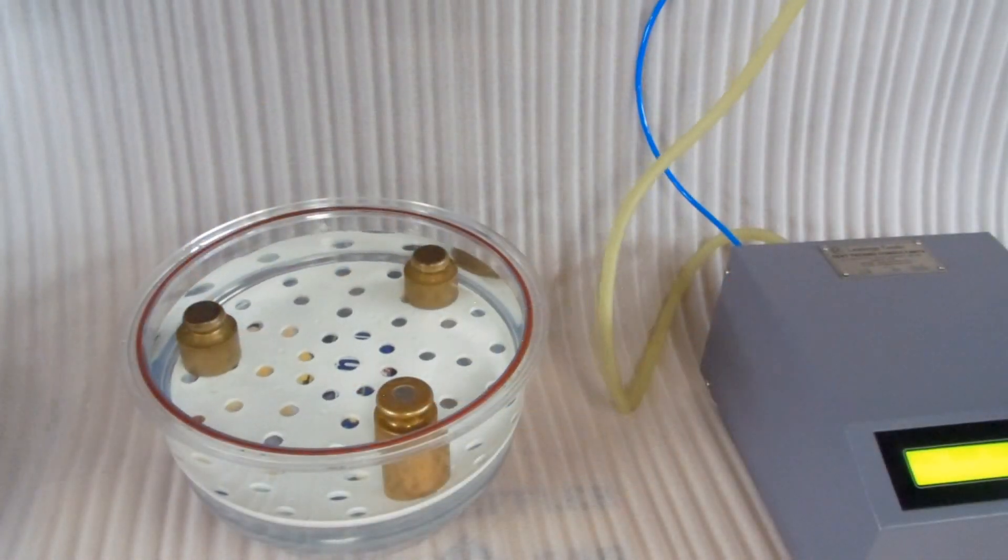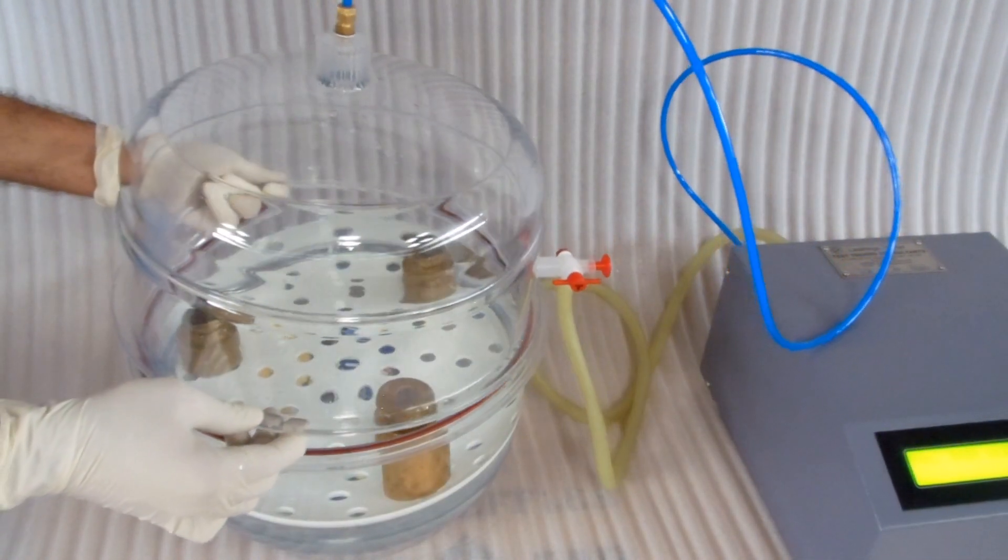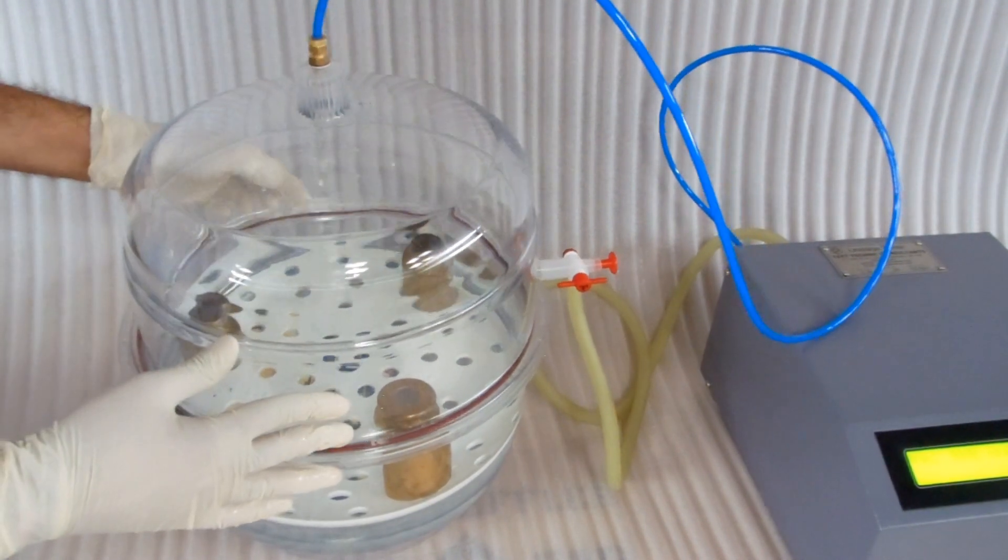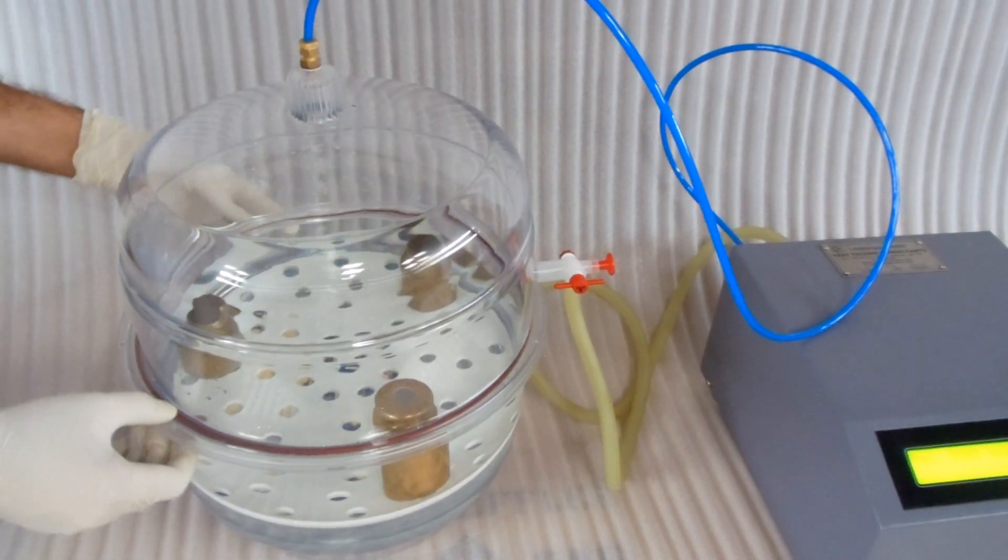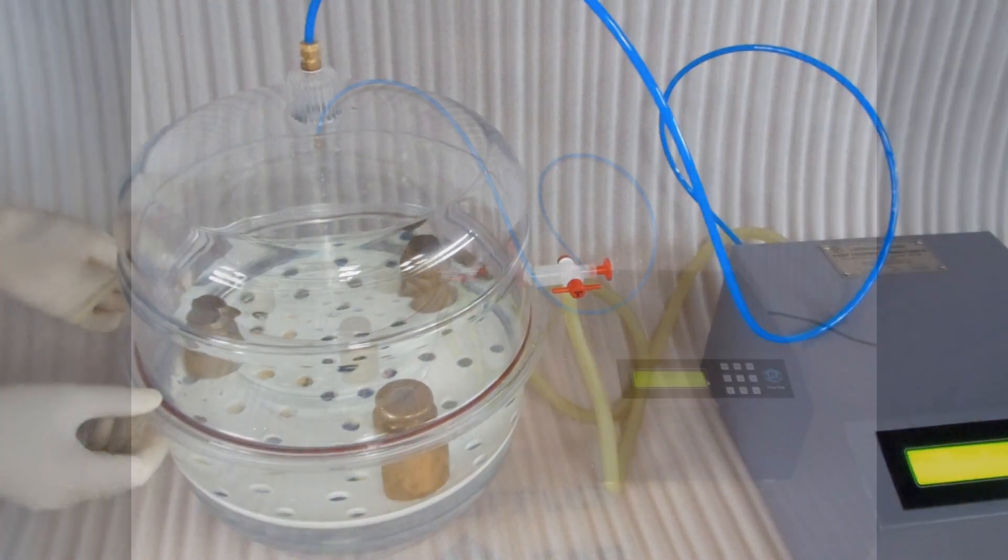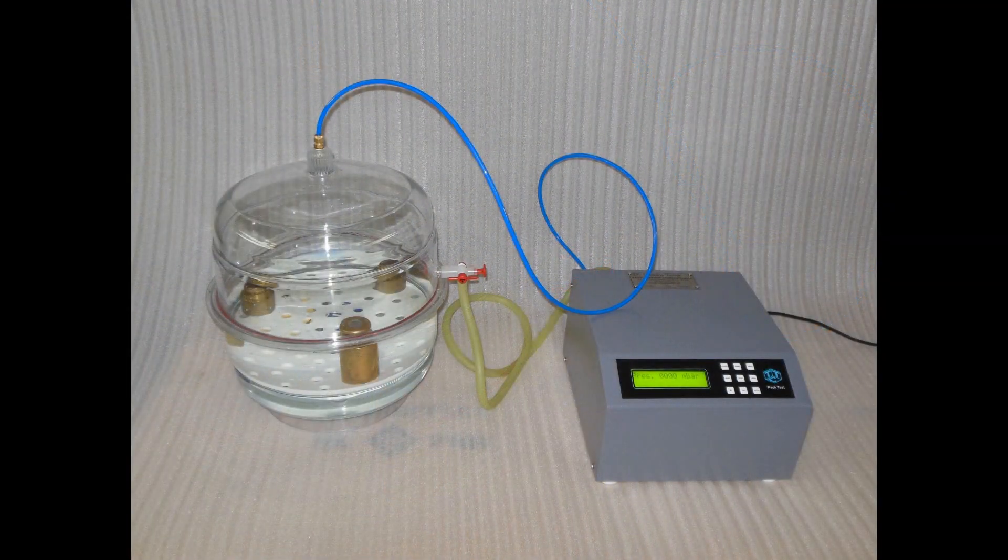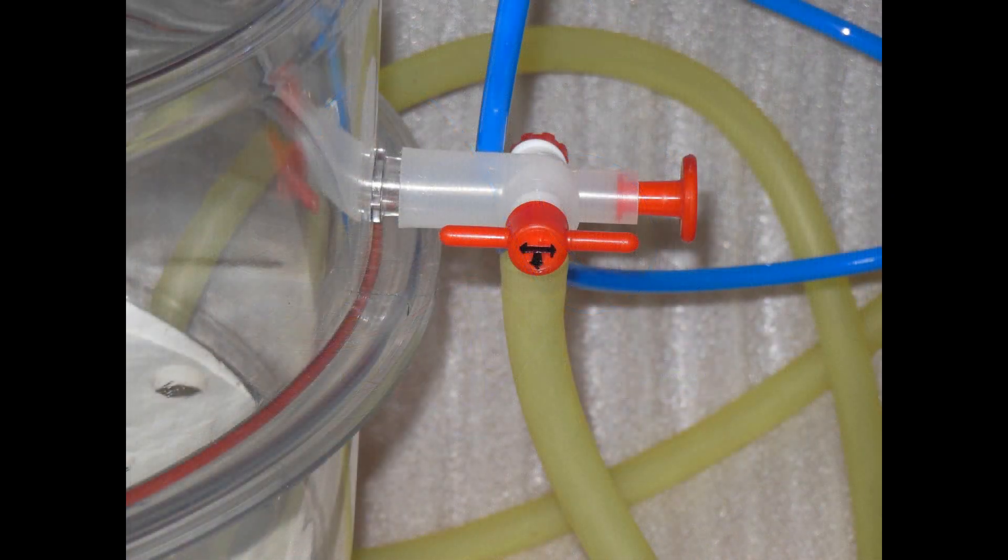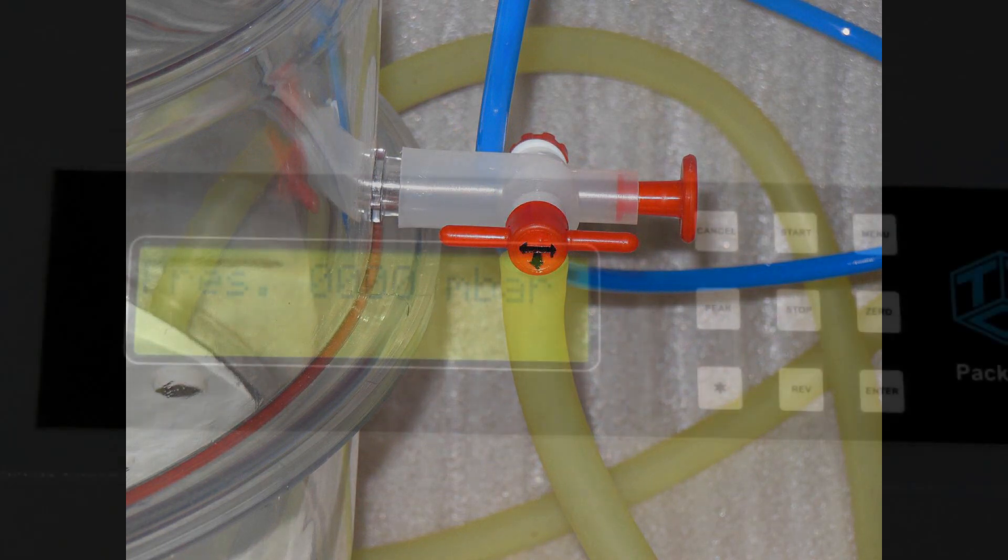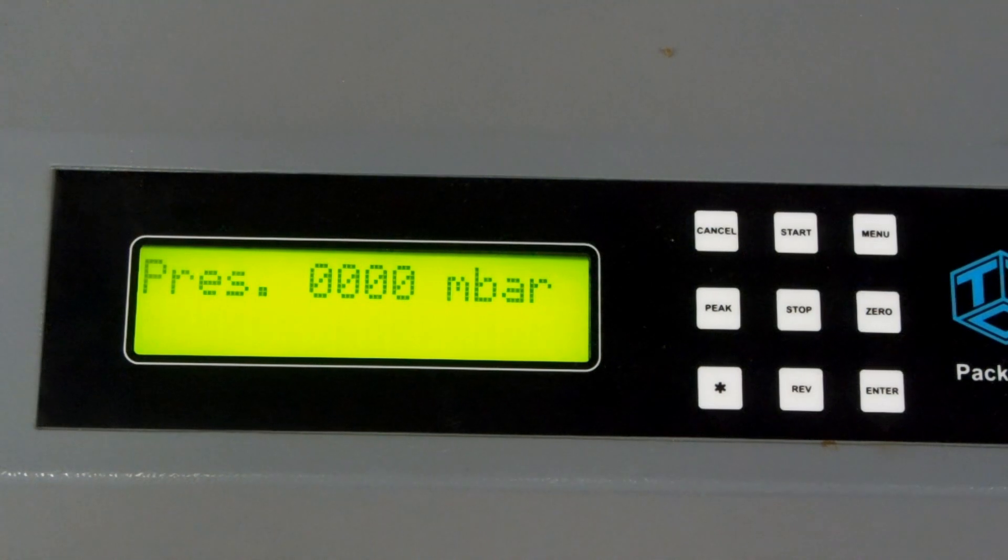Place the top half of the tank in its position. Make sure it fits properly. Make sure the red valve on the tank is positioned exactly like this. Let's see how to program the leakage tester.